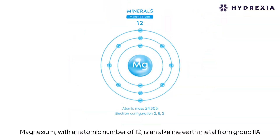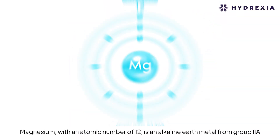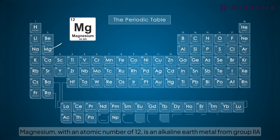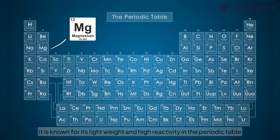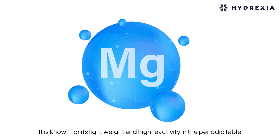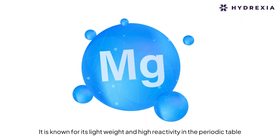Magnesium, with an atomic number of 12, is an alkaline earth metal from group IIA. It is known for its light weight and high reactivity in the periodic table.